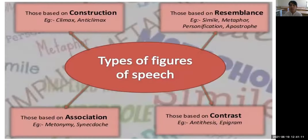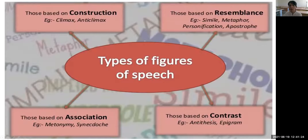There are different types of figures of speech. They are classified according to their construction, resemblance, association, and contrast. According to construction, we have two figures of speech: climax and anticlimax.